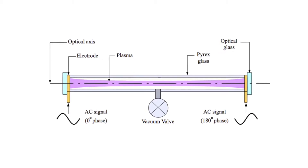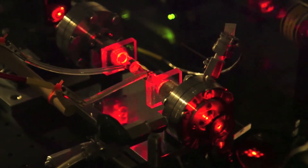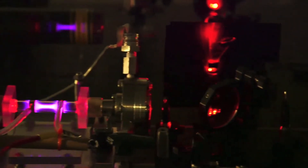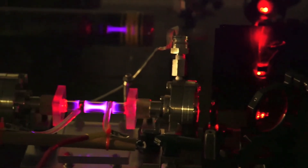We control the index of refraction by controlling the electric potential. The higher the electric potential, the higher the electron density, and the more index of refraction. Less voltage potential means less electron density and less index of refraction.